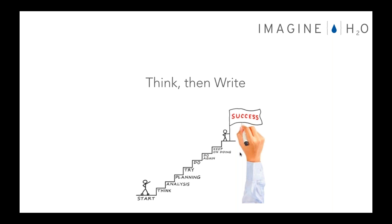The application has structure built in for you — those little gray bullet points on the application form are your structure. If you can follow those, you're going to be in good shape. Draft, rewrite, and keep on doing it — there's no reason why you can't be updating the application with data all the way up until midnight on November 1st. All you have to do is click save, and we will see the latest version in real time. Show your application to your nearest and dearest. Remember the grandmother test: if your grandmother can't understand it, there's no reason to assume why anyone else — including our judges — would.